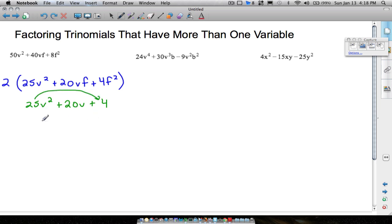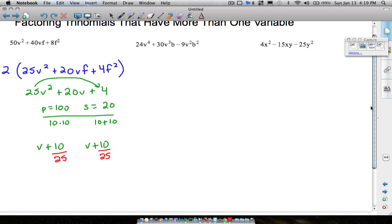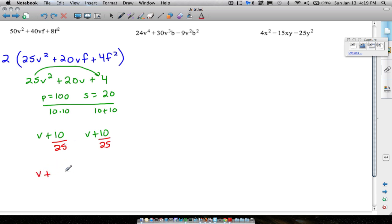So we take 25 times 4, our product is 100 and our sum is equal to 20. And the two numbers that work here will be 10 times 10, that gives us 100, and 10 plus 10 gives us 20. So what we have done in the past is we've just come back and wrote v plus 10, v plus 10. And we come back with the number we made disappear, so that's going to be 25. And then we simplify. We have v plus 2 fifths and v plus 2 fifths.